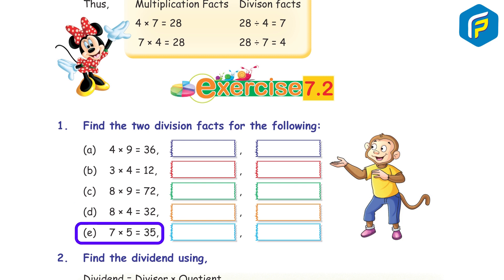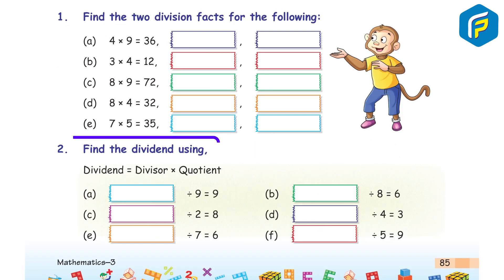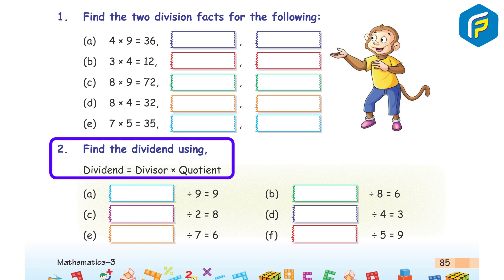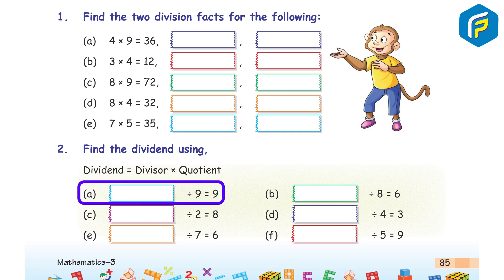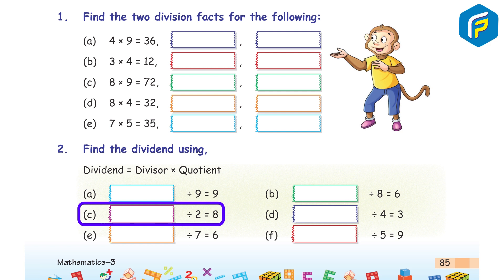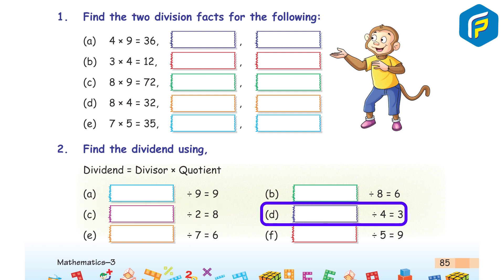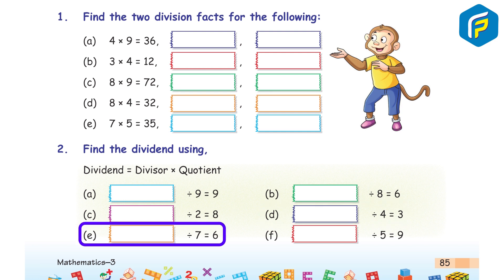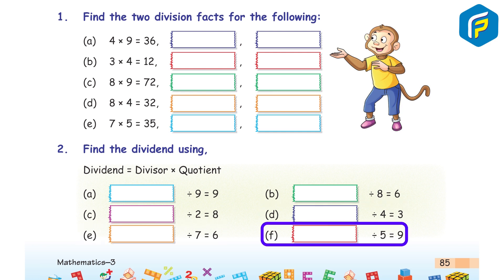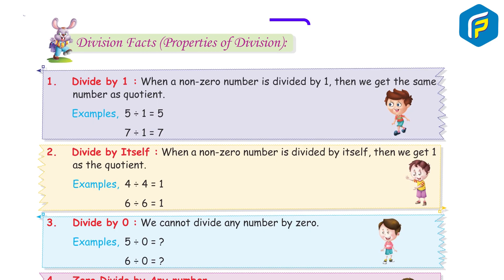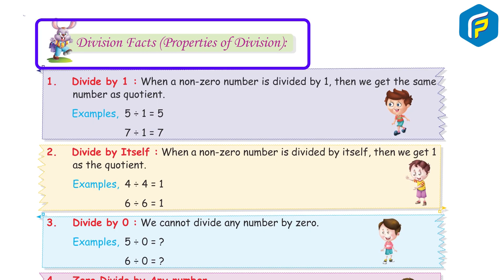e) 7 × 5 = 35: division facts are 35 ÷ 7 = 5 and 35 ÷ 5 = 7. Question 2: Find the dividend using dividend = divisor × quotient. a) 81 ÷ 9 = 9. b) 48 ÷ 8 = 6. c) 16 ÷ 2 = 8. d) 12 ÷ 4 = 3. e) 42 ÷ 7 = 6. f) 45 ÷ 5 = 9.